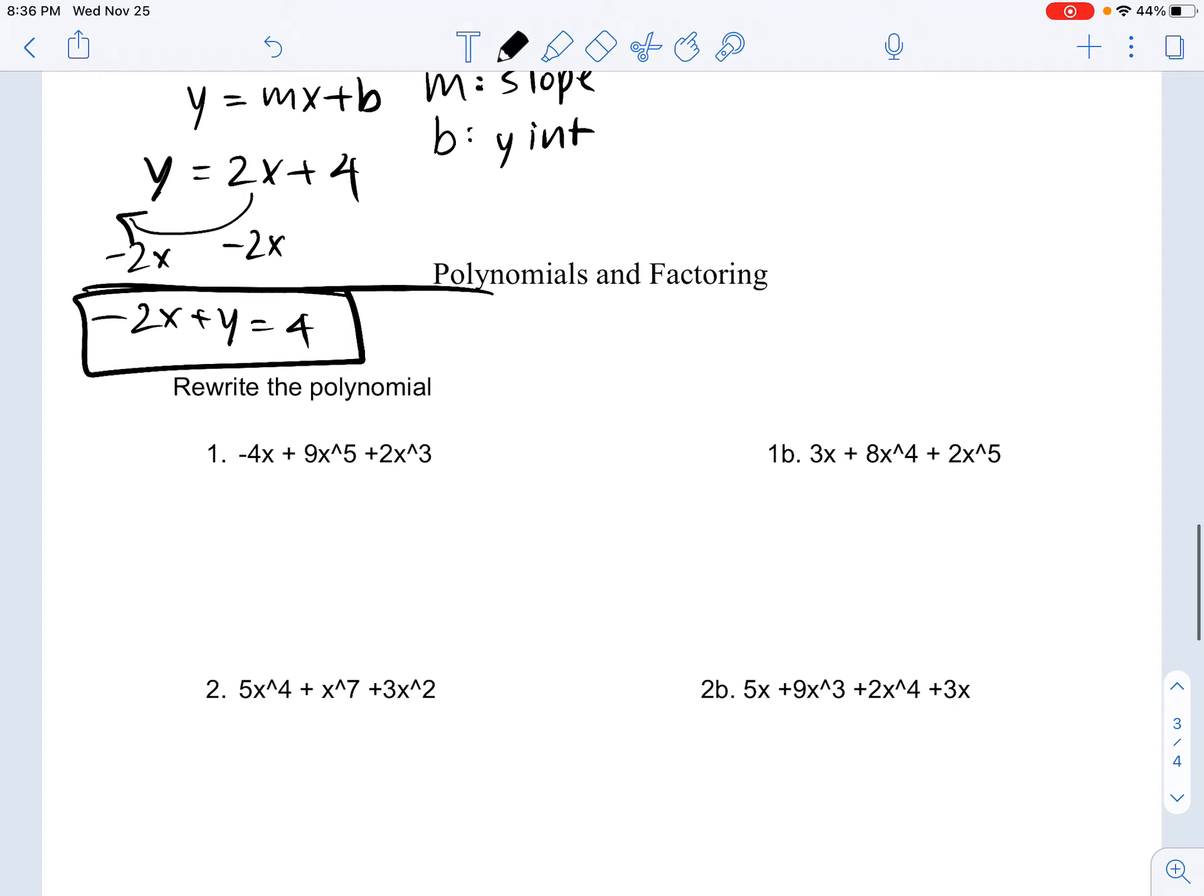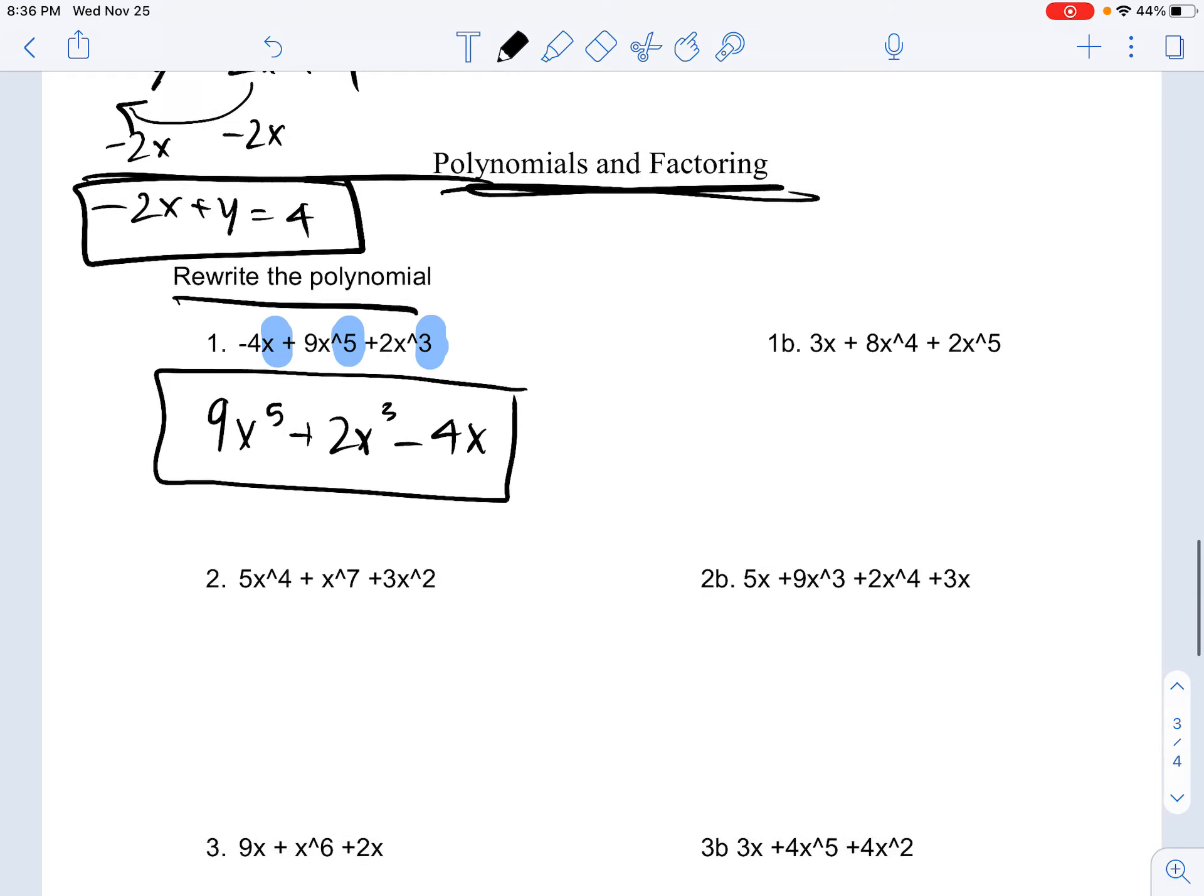Moving on. Now we're going to be going over polynomials and factoring. When it says rewrite the polynomial, that just means write it in a way where the powers are descending from left to right. So what's your greatest power in this problem? Well, that's obviously this 5. What's your second greatest? This 3. What's your last? Well, it would be this 1, but since it's just 1, we just put X. Now to format it correctly, we would write 9X to the 5th plus 2X cubed minus 4X. And that's it. It's very simple.